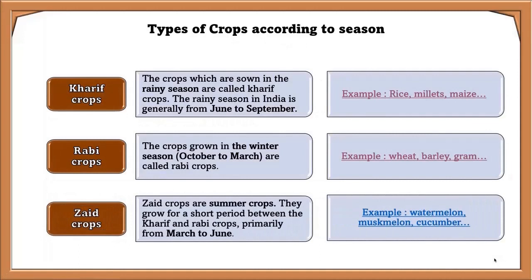Zaid crops are summer crops. They grow for a short period between the Kharif and Rabi crops, primarily from March to June. The season during which Zaid crops are grown is known as the Zaid crop season. Zaid crops require warm, dry weather and longer day lengths for flowering. Some crops require summer months and rainy seasons, and these crops tend to mature quickly.